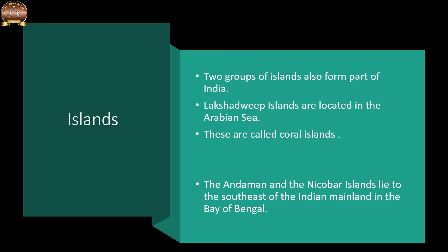Two groups of islands also form part of India. The Lakshadweep Islands are located in the Arabian Sea and are coral islands off the coast of Kerala. The Andaman and Nicobar Islands lie to the southeast of the Indian mainland in the Bay of Bengal.